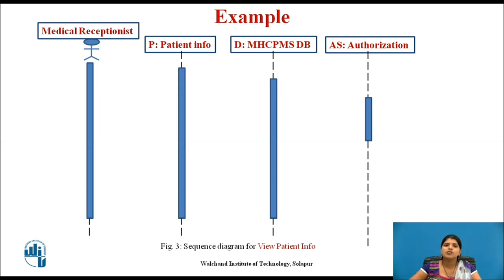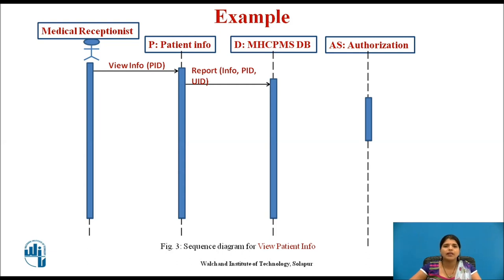Here, the interaction involved is the view patient information use case. First, the medical receptionist triggers the view info method of the patient info object, supplying PID — that is, the patient's identifier. P is the object class showing patient information. Then, P calls the MHC-PMS database to return the information required, supplying the receptionist identifier to allow a security check. At that time, the database checks with an authorization system that the user is authorized for this action.